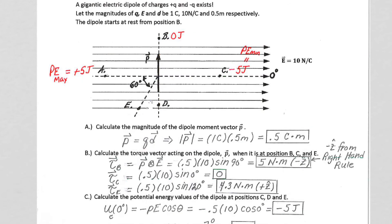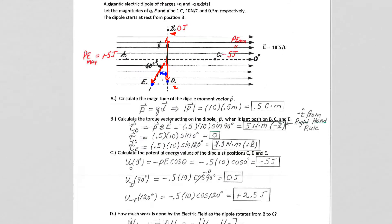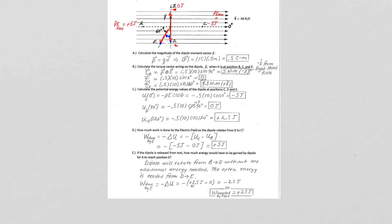So naturally, this dipole would go between B and D, but we want the dipole to be released from B and make it all the way over to E. So basically, it needs this much additional energy. So how do we calculate how much additional energy it takes to go from D to E? Well, we can take a look at what the potential energy values are at those points. So the dipole will rotate from B to D, as we said, without any additional energy needed.